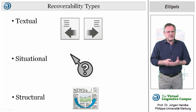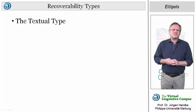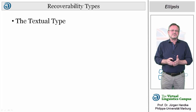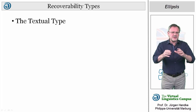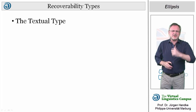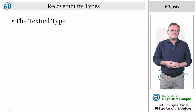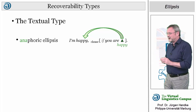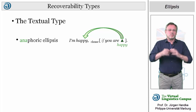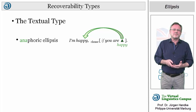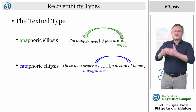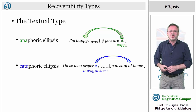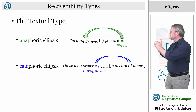In sentences with textual ellipsis, the interpretation depends on what is said or written in the linguistic context. Relative to the positions of the ellipsis and its antecedent, two types can be distinguished: anaphoric ellipsis, as in 'I am happy, if you are,' where the interpretation depends on what comes before; and cataphoric ellipsis, where the interpretation depends on what follows, as in 'Those who prefer can stay at home.'